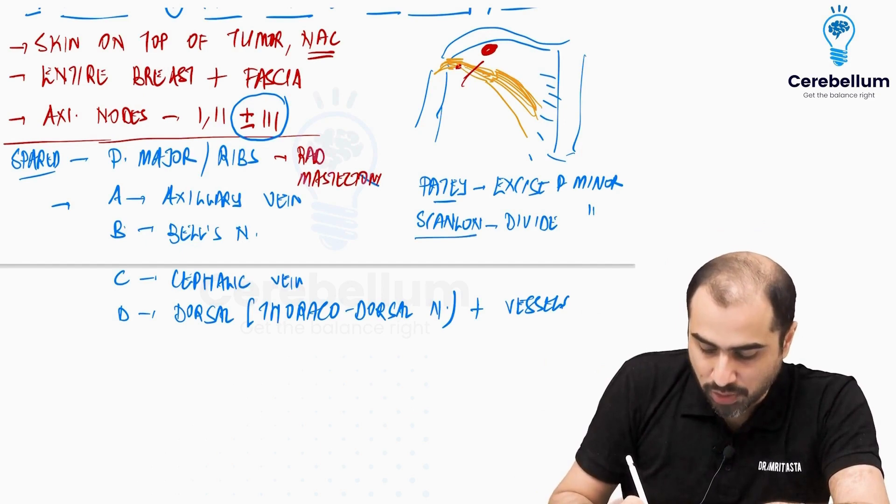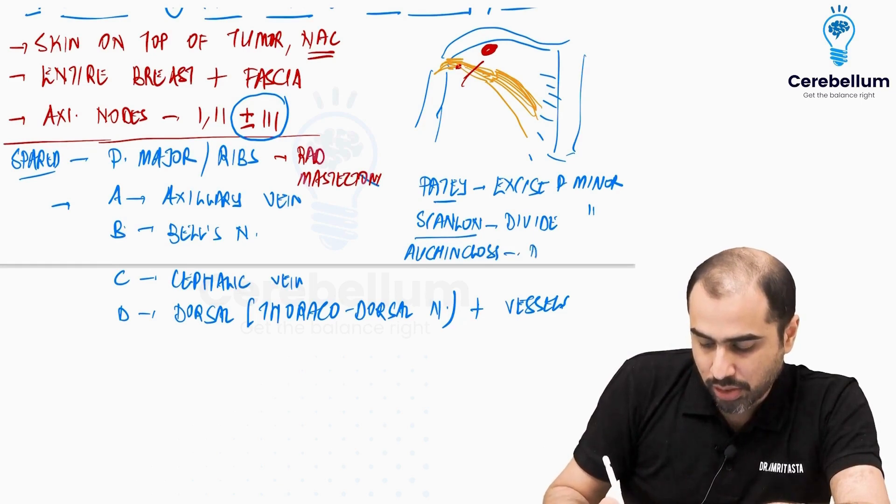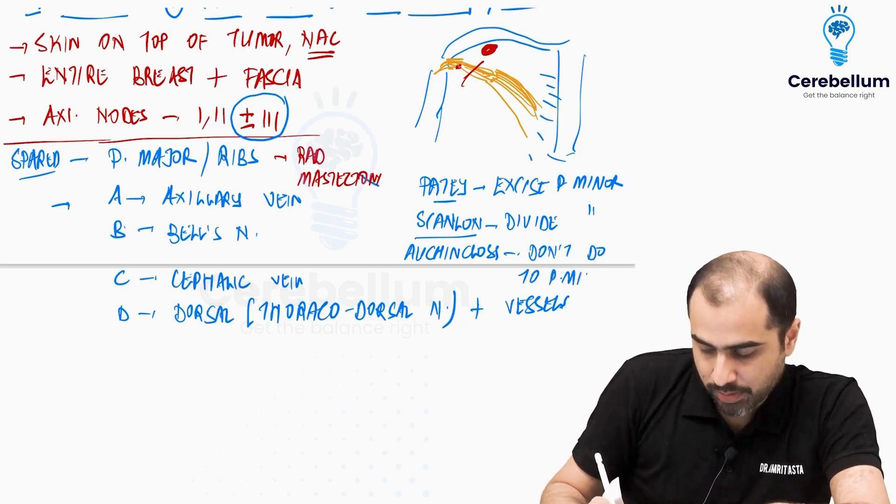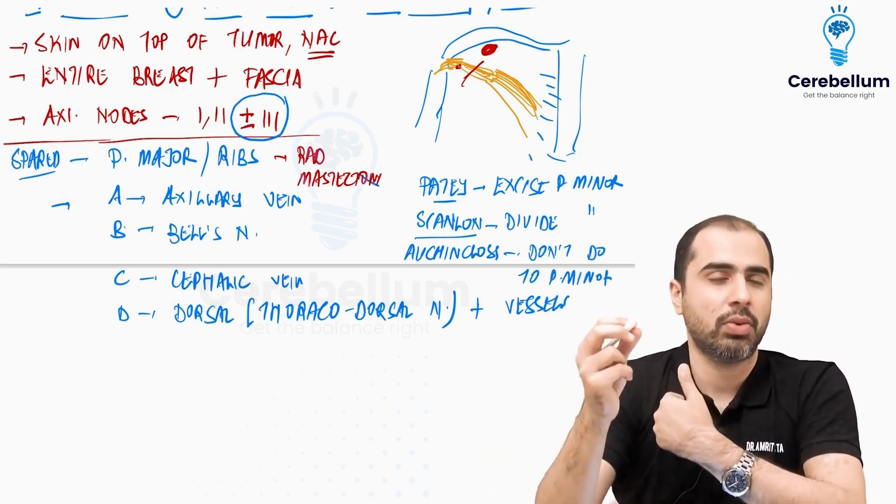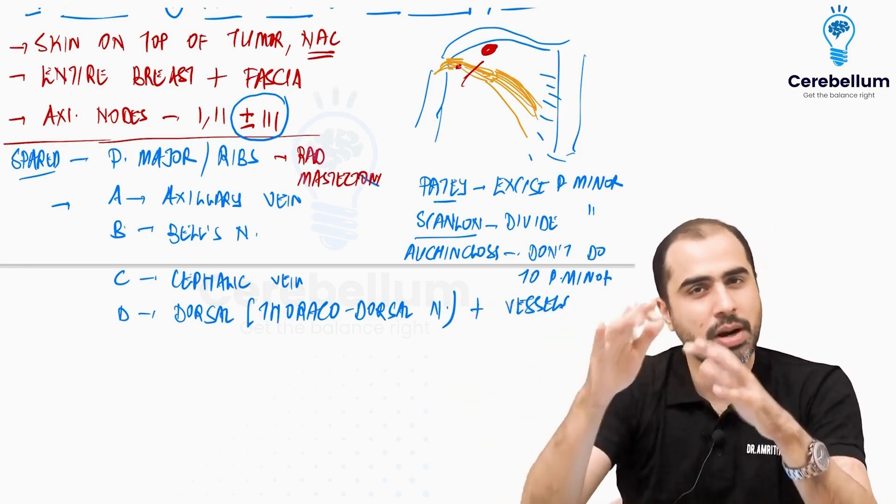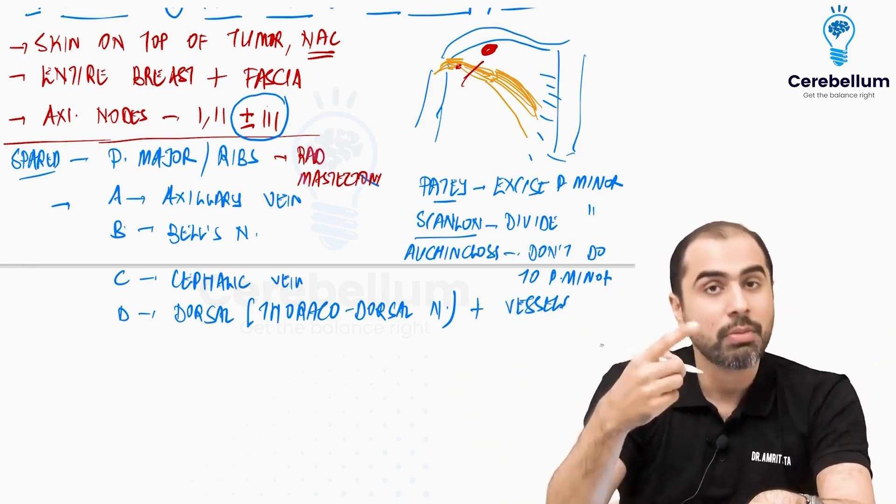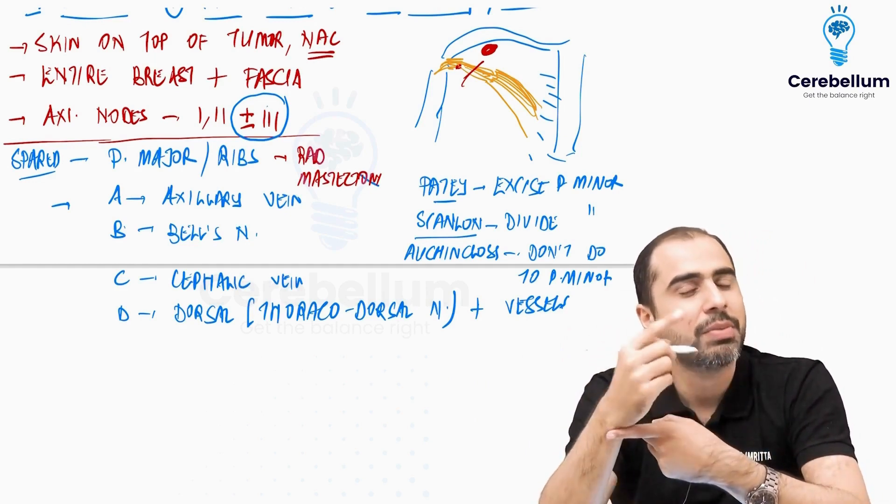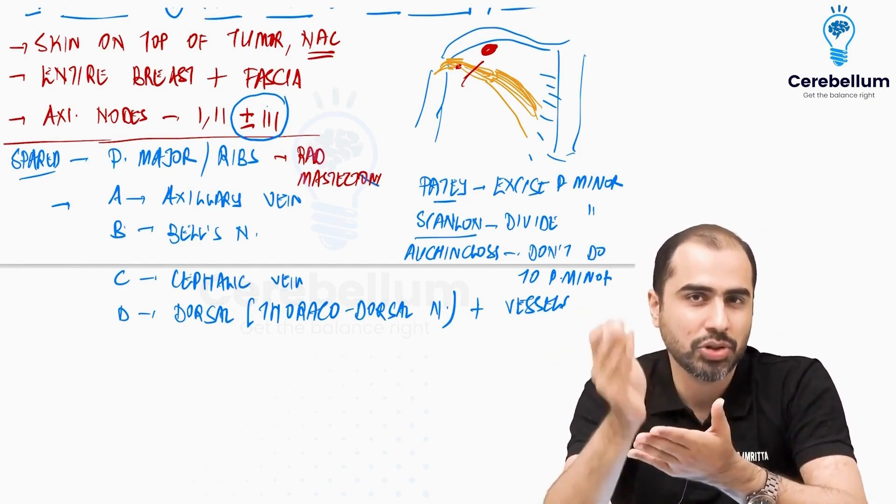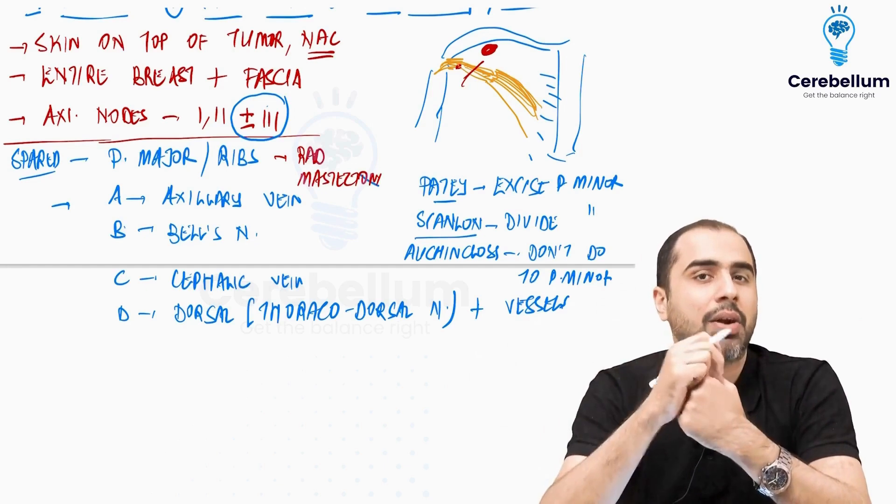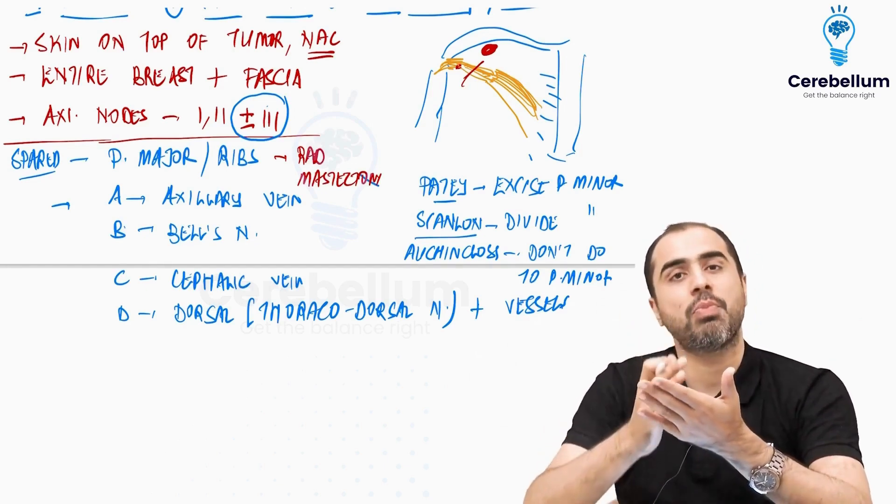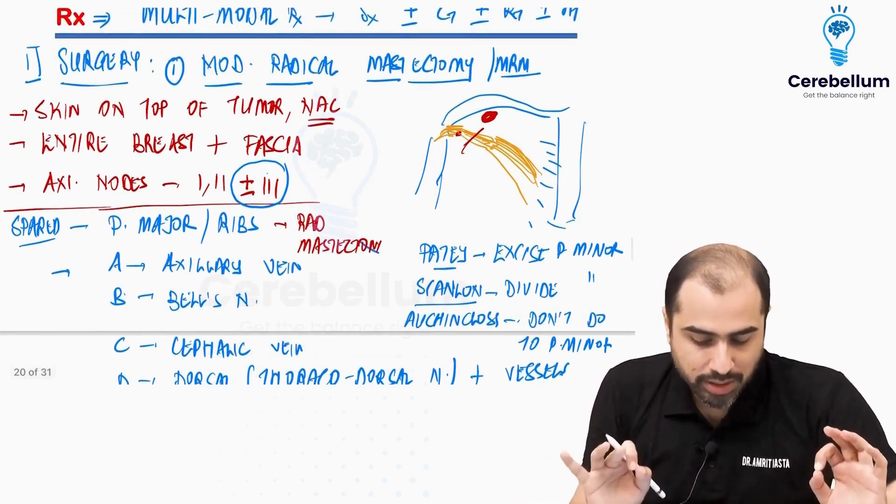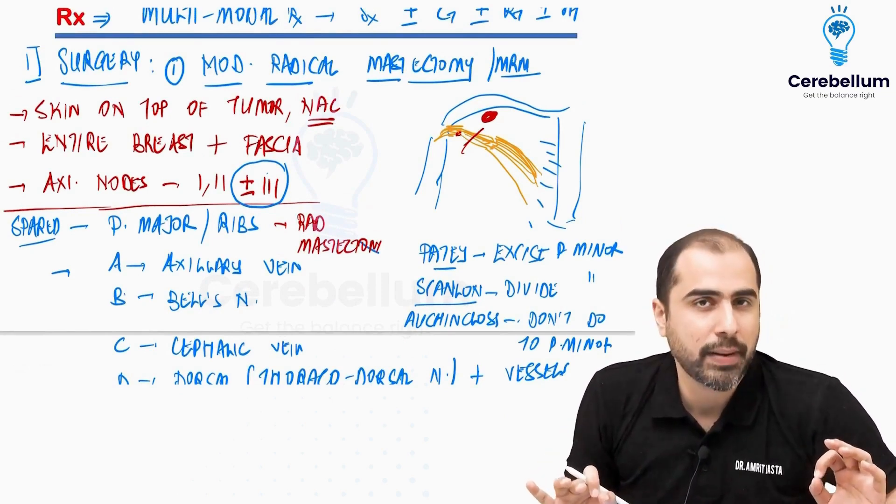And the last one, the last modification is what is called as Auchincloss. Auchincloss said, don't touch the pec minor, don't do anything to pec minor. If you are able to remove the level 3 node, fine by going behind it. If you can't, let it be. Which is why, you may or may not remove level 3 nodes. In Auchincloss modification, level 3 nodes need not be removed. In Patey's and Scanlon's, you are dividing the pec minor, getting the access and taking it out. That's why the MRMs have been modified.